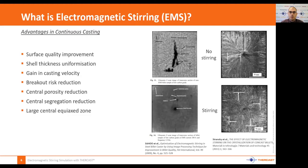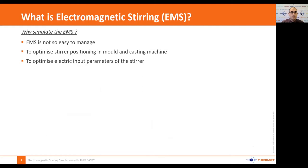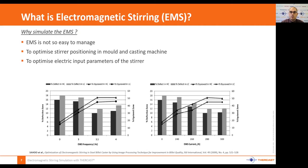Without stirring you get a columnar structure coming from the edge to the center, whereas with stirring this columnar structure stops quickly and is replaced with an equiaxed solidification structure. Why simulate EMS? Simply because it's not easy to determine the best position of the stirrer or how to optimize the power supply. Some parameters like frequency have an optimum, and outside of this optimum porosity increases.